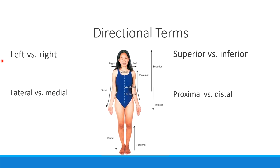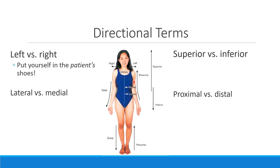Let's start with the first set of directional terms. When we're comparing the left side and the right side of a person or a model, we have to put ourselves in the patient's shoes. If I look at this woman, my left side as I look at her is over here, and my right side is over here — but for my patient, it's the opposite. It's very important that we remember that: left side for the patient, right side for the patient.